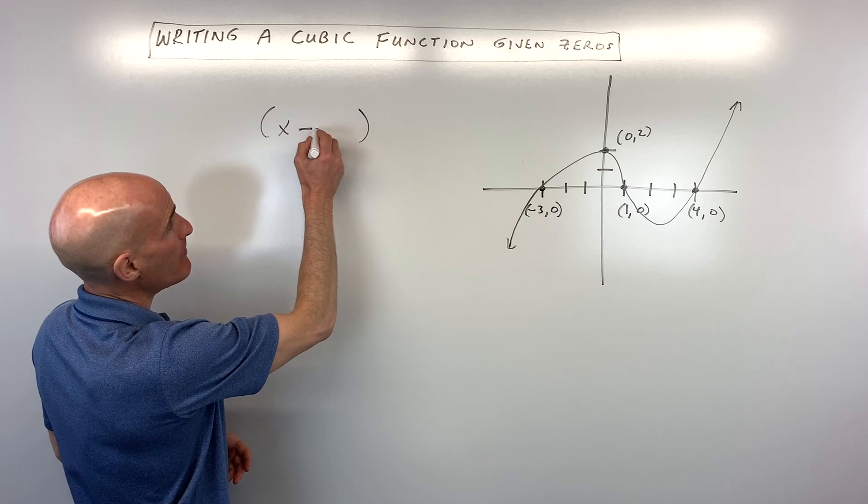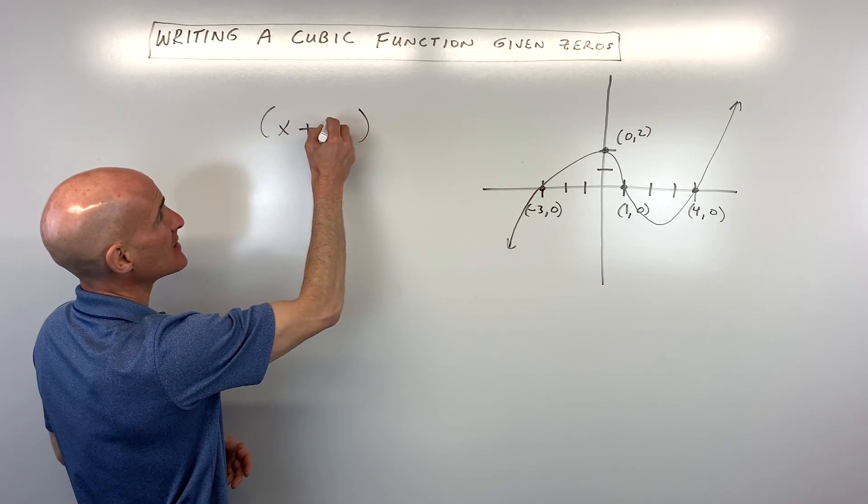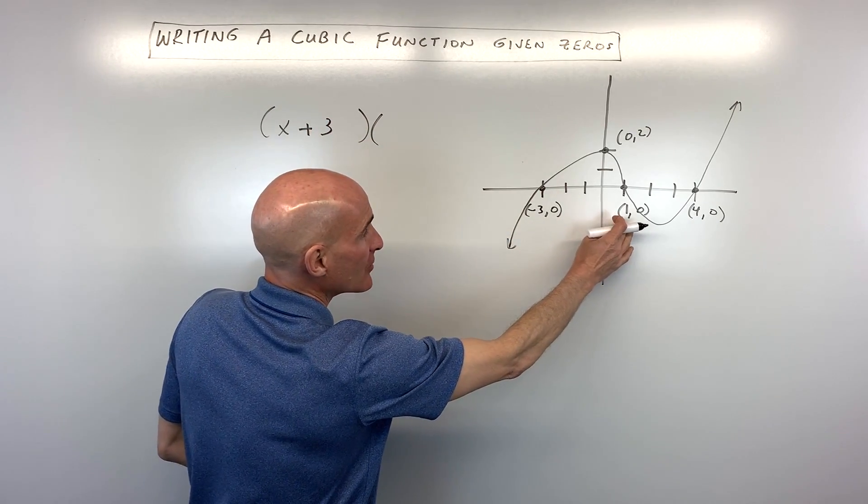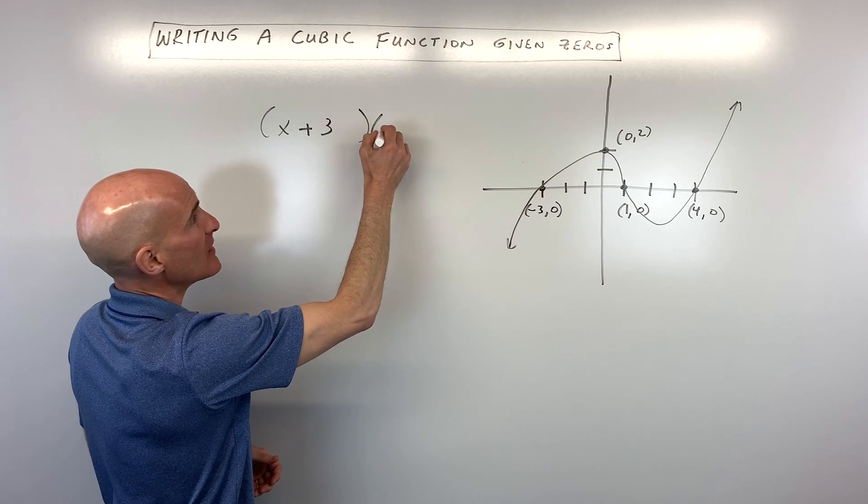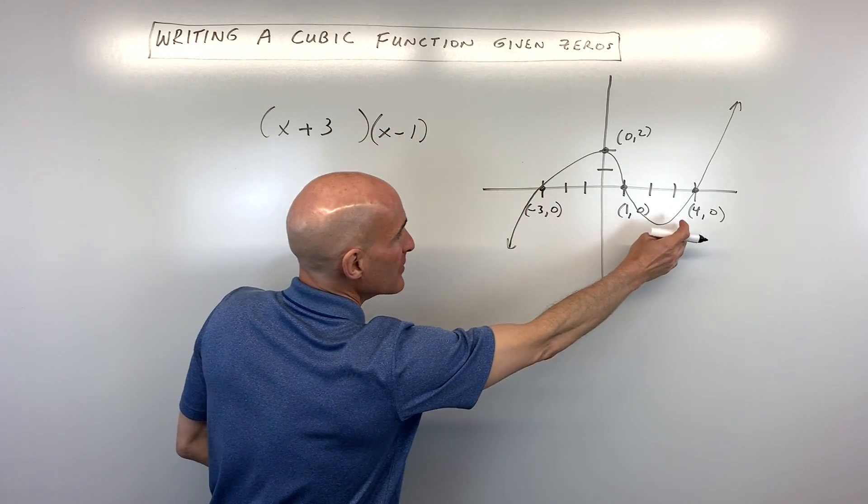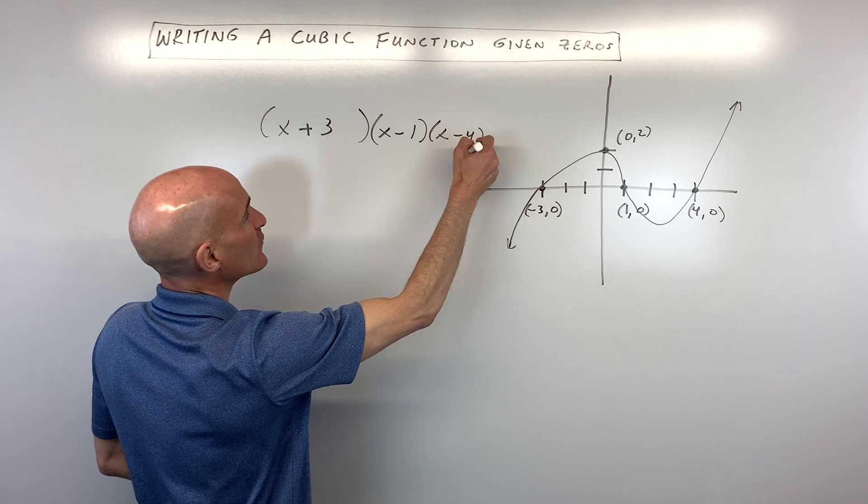So in this case the factor would be x minus negative 3 which is x plus 3. This factor here because it crosses at 1 is going to be x minus 1 and then because this x-intercept is 4 it's going to be x minus 4.